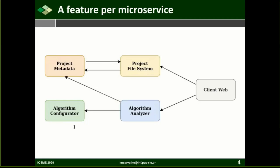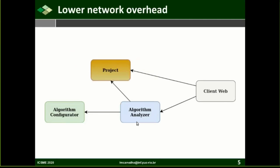However, feature modularization is not enough. Among other concerns, the network overhead caused by communication between microservices can impact the identification of microservices. In this case, the Project File System and Metadata have been merged into the Project microservice as a way to mitigate high network overhead communication. Criteria-based identification, such as network overhead and feature modularization, are essential for adequate identification of microservices.